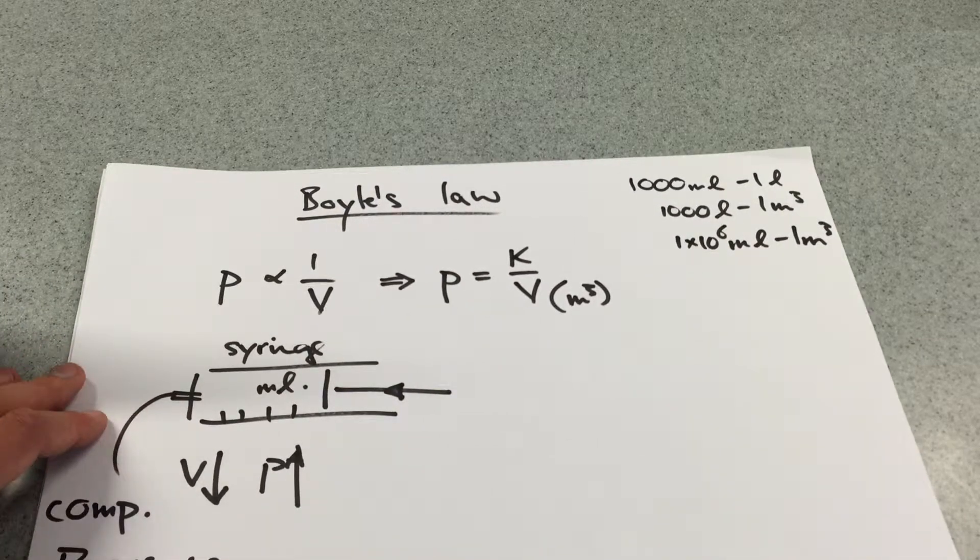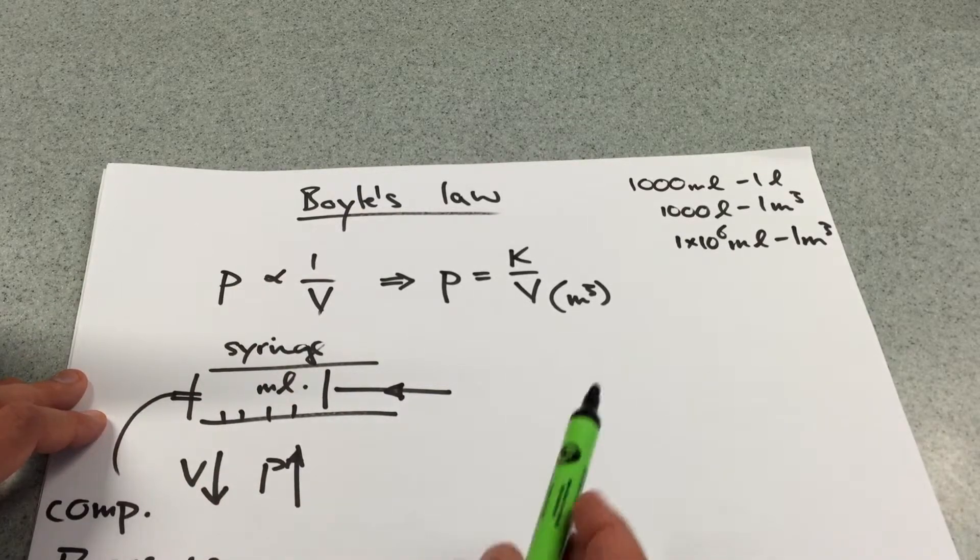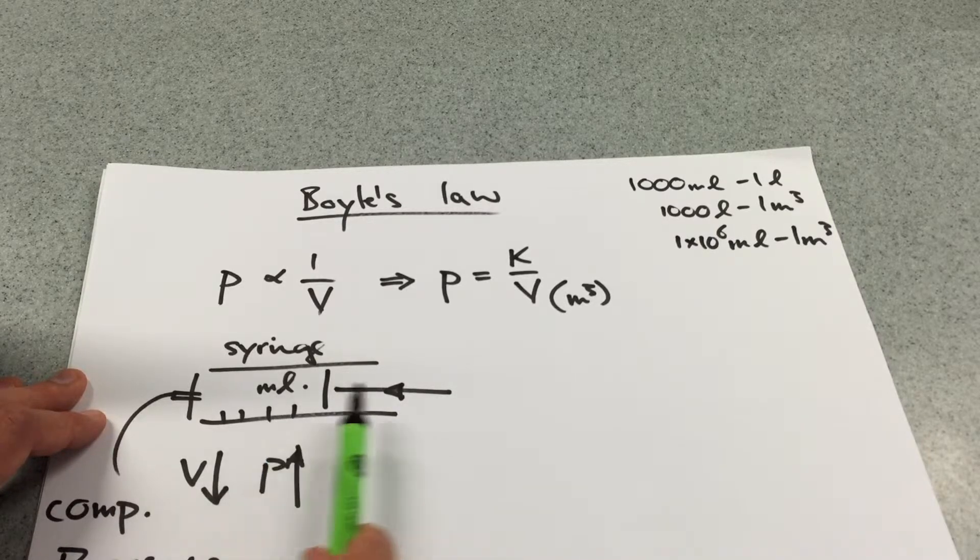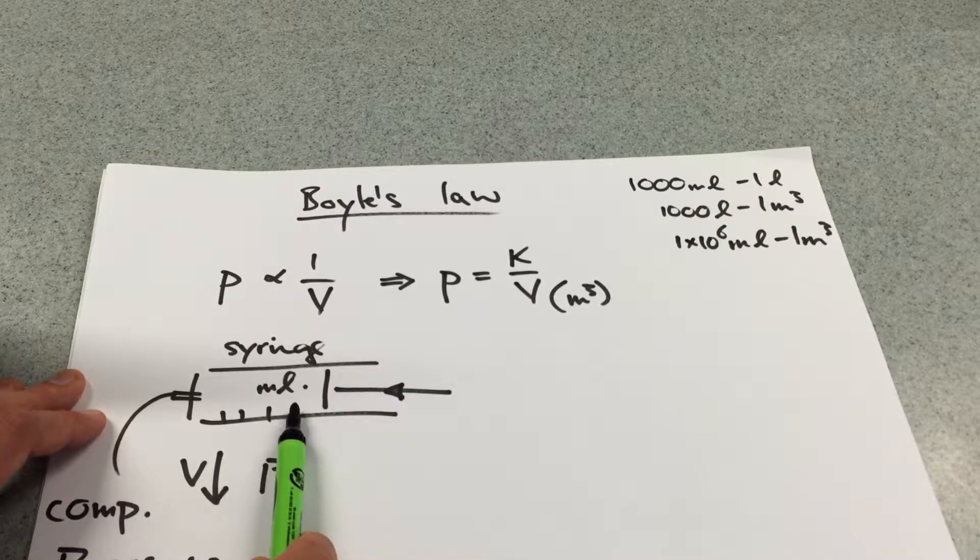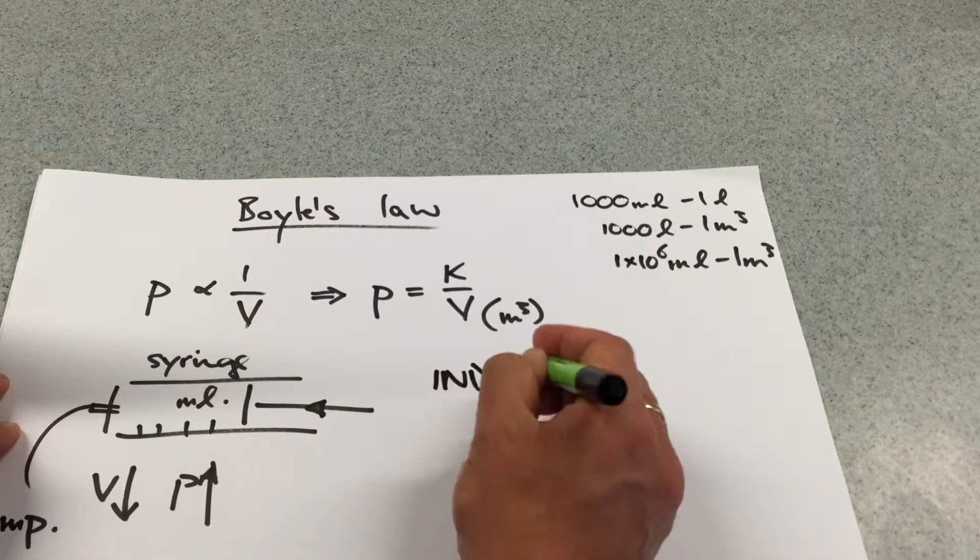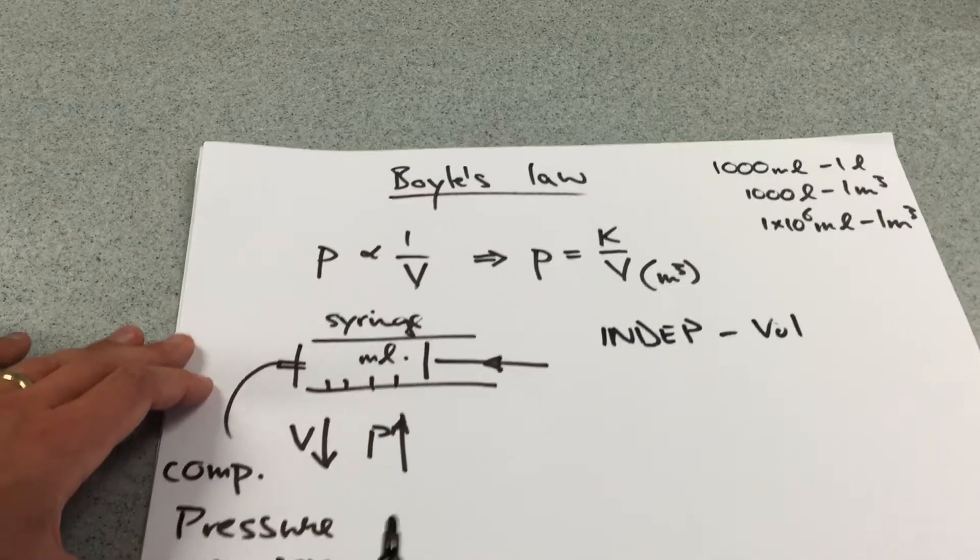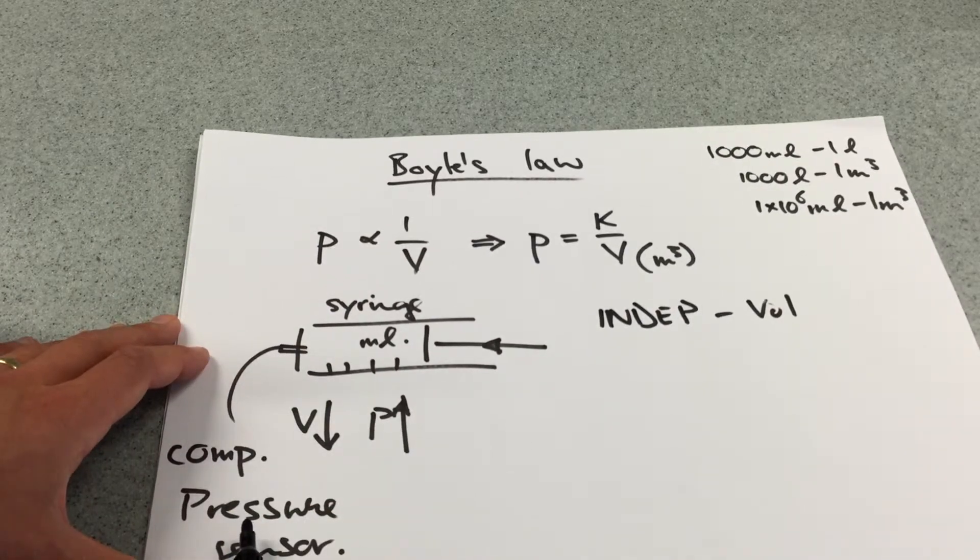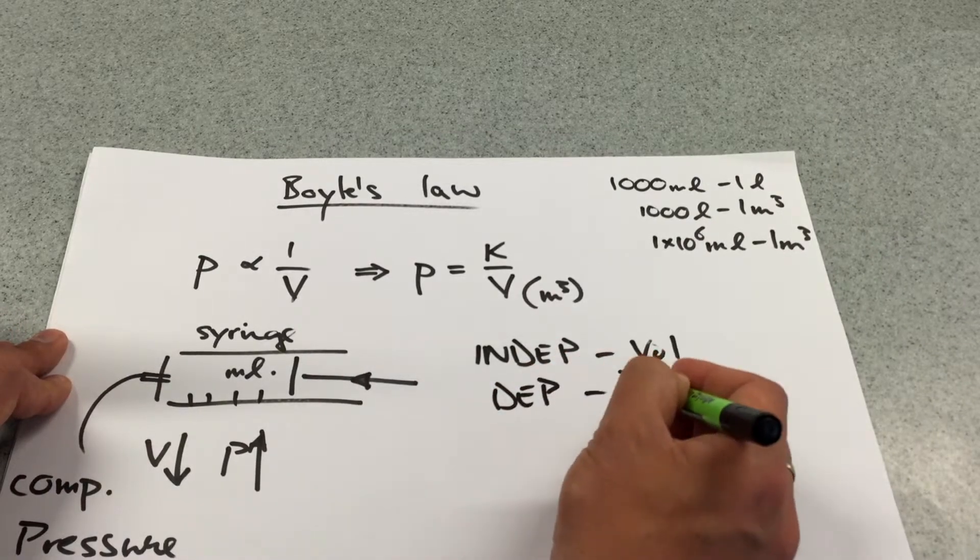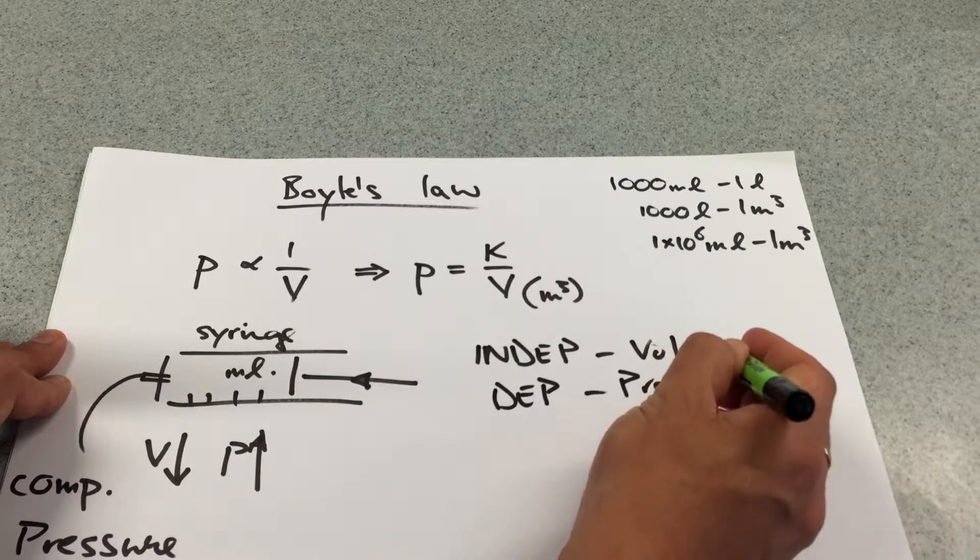Okay, so first things first, what am I changing? What is my independent variable? Well, I'm going to push this in and achieve a certain volume. So I'm going to drive this in and achieve a volume. So my independent variable is going to be the volume and therefore what am I measuring? Well, the computer is going to measure the pressure. So my dependent is going to be pressure. Just write that in full.